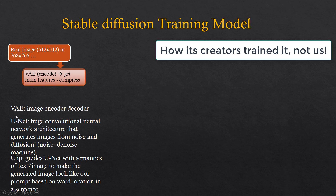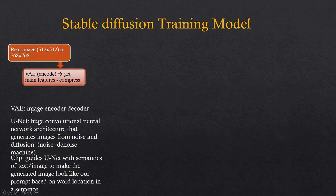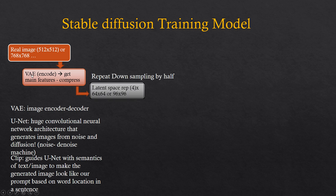We keep hearing about VAE, UNET, and CLIP. So basically VAE is just an image encoder and decoder. Images fed in the training phase of Stable Diffusion — like 512 by 512, 768 by 768, etc. — are first encoded using VAE. VAE is used in the encoding process during training, and it is used in the decoding during image generation. They encode the images like a compression down to smaller sets of 64 by 64 images with four dimensions, or 96 by 96 for the larger images.